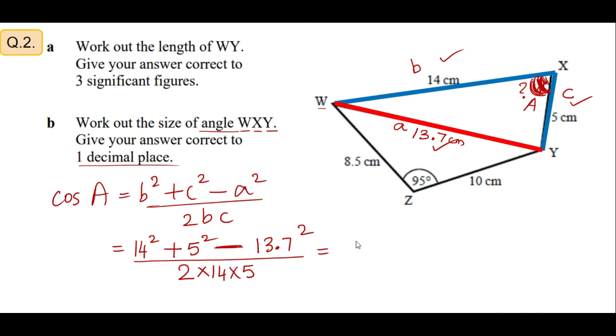Which gives you the answer 0.2379 which is your cos A. So from this, angle A which is WXY is going to be equal to cos inverse of this value, which is equal to 76.2 degrees. We have given the answer to correct one decimal place.